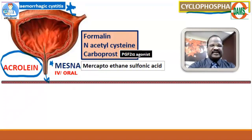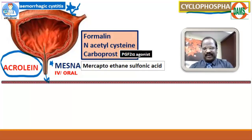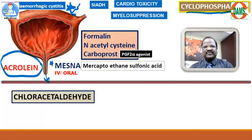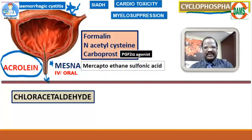Cyclophosphamide also causes SIADH — due to anti-diuretic hormone action it causes water retention leading to dilutional hyponatremia. It also causes cardiotoxicity and myelosuppression. In summary, the important adverse effects of cyclophosphamide are: number one, hemorrhagic cystitis; number two, SIADH; number three, cardiotoxicity; and myelosuppression.